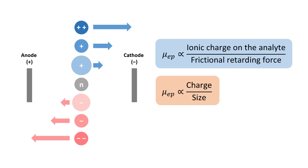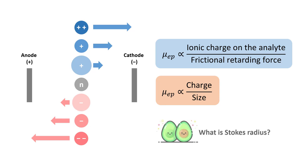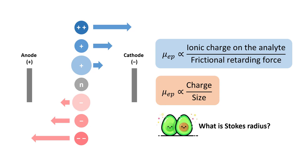But there's a catch here. Since the electrophoretic mobility is related to the frictional retarding factors, the size we are referring to here is not the ionic radius of the analyte but the Stokes radius. So the next question is: what is Stokes radius?